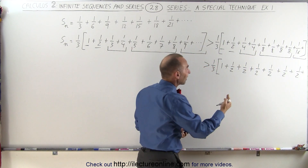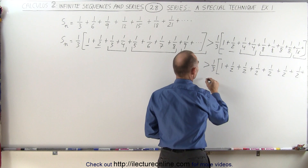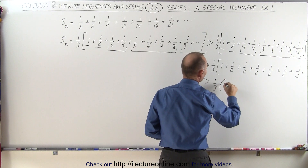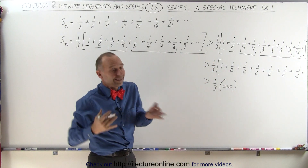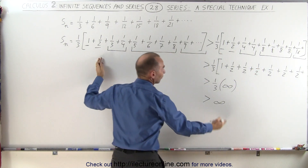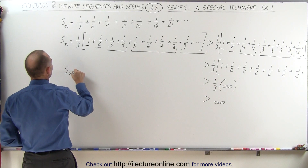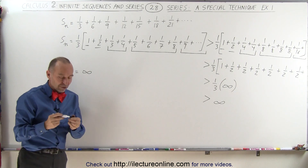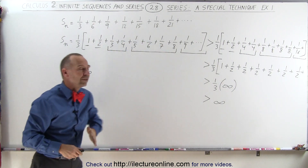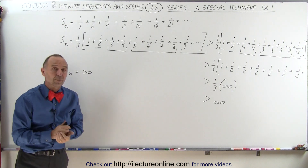You can see that on the right side we will be adding one-half an infinite number of times, which means the right side is greater than one-third times infinity — which is still infinity. Since the left side must be greater than the right side, and the right side is infinity, the left side must be infinity as well. So even though it appears that the terms get smaller quickly enough, the sum equals infinity — it is not convergent, it is divergent.